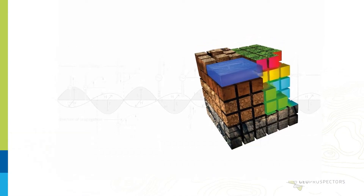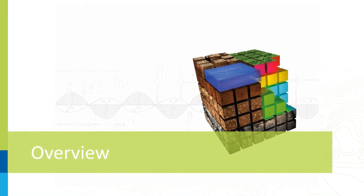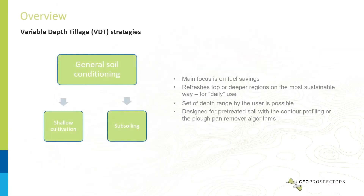As an overview of cultivation modes, we can distinguish four different modes of operation, which we can furthermore classify into two main focuses — let's say purposes in mind. The first class is General Soil Conditioning. This class was designed for preserving resources during application. Shallow cultivation and subsoiling actions are common in conventional farming — these are daily activities. Soil loosening is done multiple times over the year, meaning we use a lot of fuel to get our soil prepared for the season.